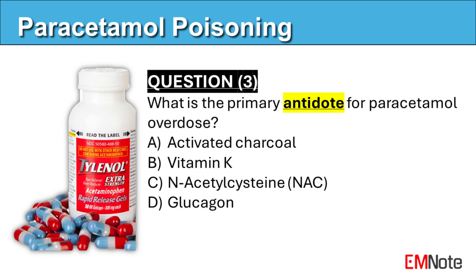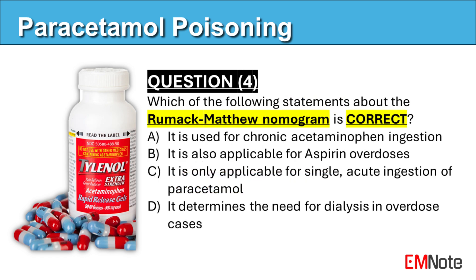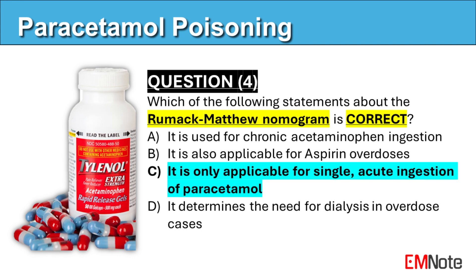Question 3: What is the primary antidote for paracetamol overdose? The correct answer is C: N-acetylcysteine. Question 4: Which of the following statements about the Rumack-Matthew nomogram is correct? The correct answer is C: The Rumack-Matthew nomogram is only applicable for single, acute ingestion of paracetamol.